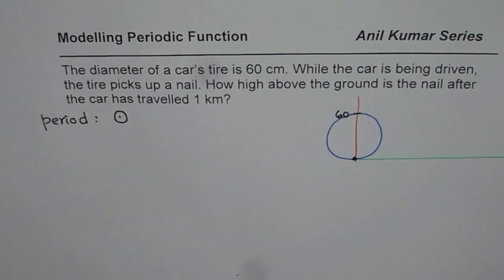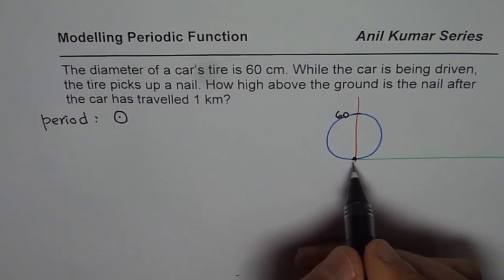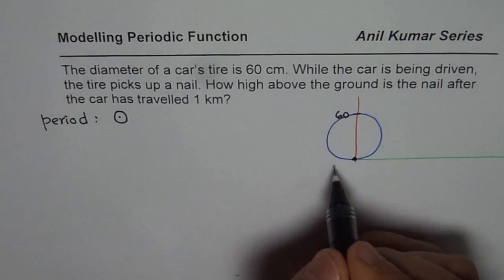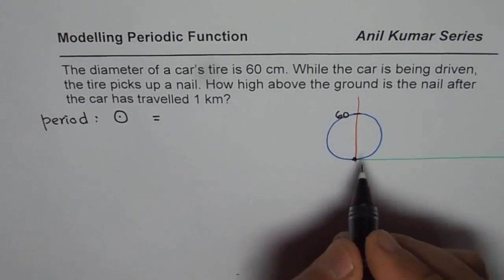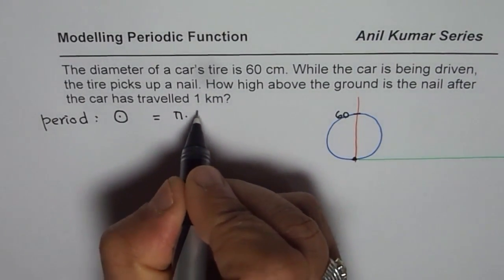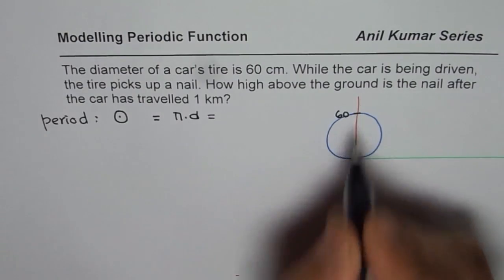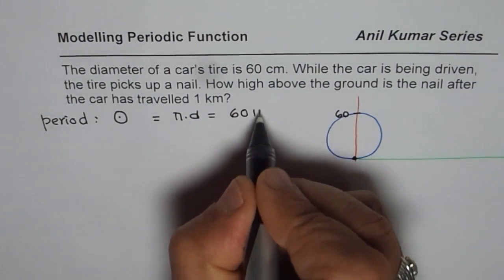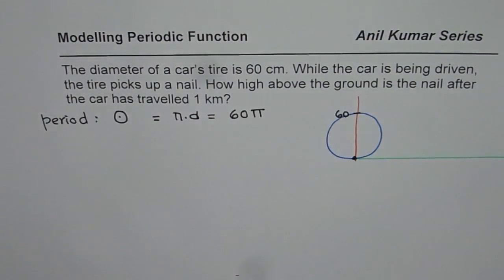Let me write it down like this. It is the circumference. Distance traveled along the circumference, which in this case will be π times the diameter. Since the diameter is given to us as 60, we can write this as 60π. That is a very critical part to understand.